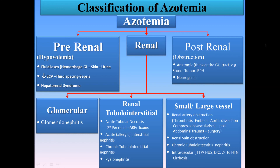The third part involves vascular causes resulting in renal azotemia. Main examples include renal artery occlusion for any reason such as thrombotic, embolic, or due to abdominal aortic dissection from trauma or iatrogenic causes. Other examples are renal vein obstruction, chronic tubular interstitial nephritis, and intravascular causes such as TTP, HUS, DIC, and hypertension complications.